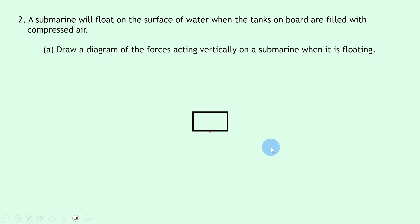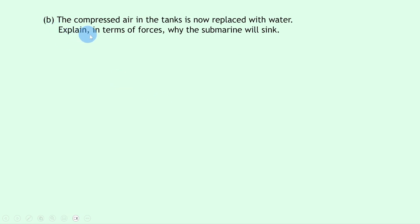So firstly the downwards force is going to be weight again, and since the submarine is floating, it must have balanced forces acting on it. So there must be an equal but opposite force acting upward, and we call this force buoyancy or upthrust.